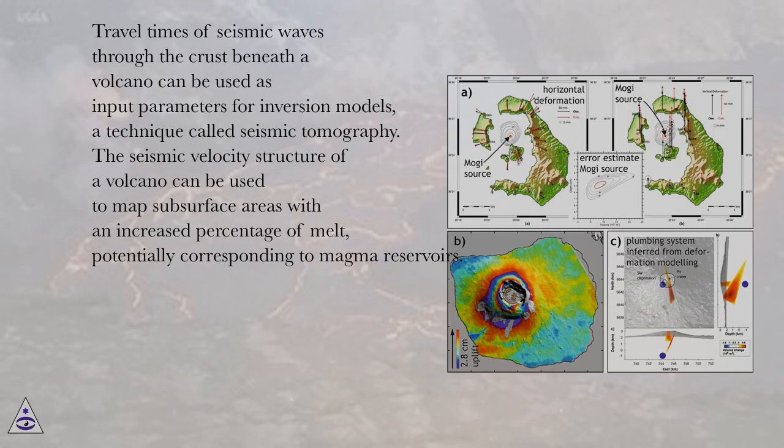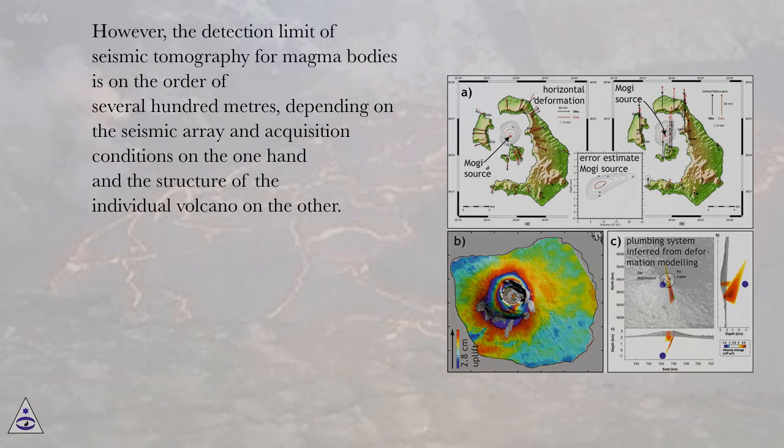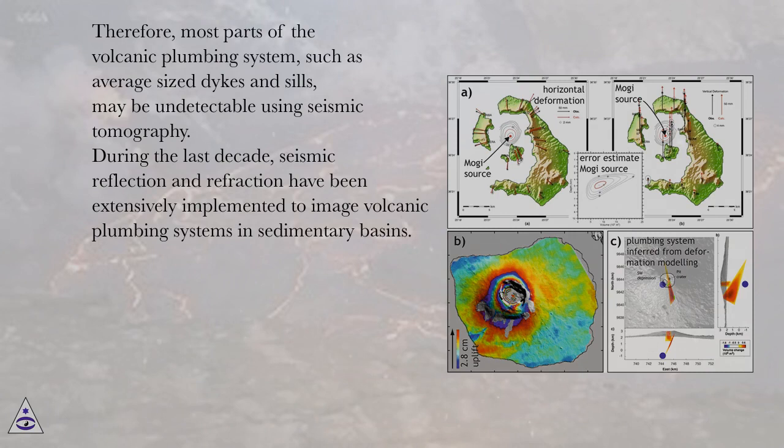However, the detection limit of seismic tomography for magma bodies is on the order of several hundred meters, depending on the seismic array and acquisition conditions on the one hand and the structure of the individual volcano on the other. Therefore, most parts of the volcanic plumbing system — such as average-sized dikes and sills — may be undetectable using seismic tomography.